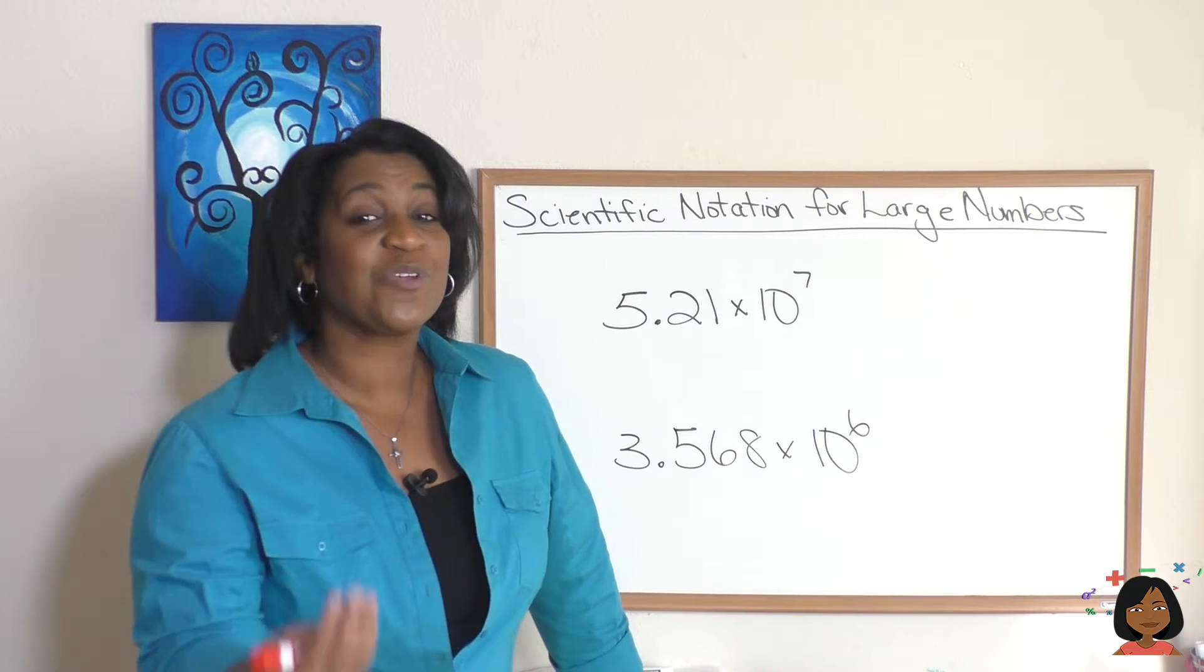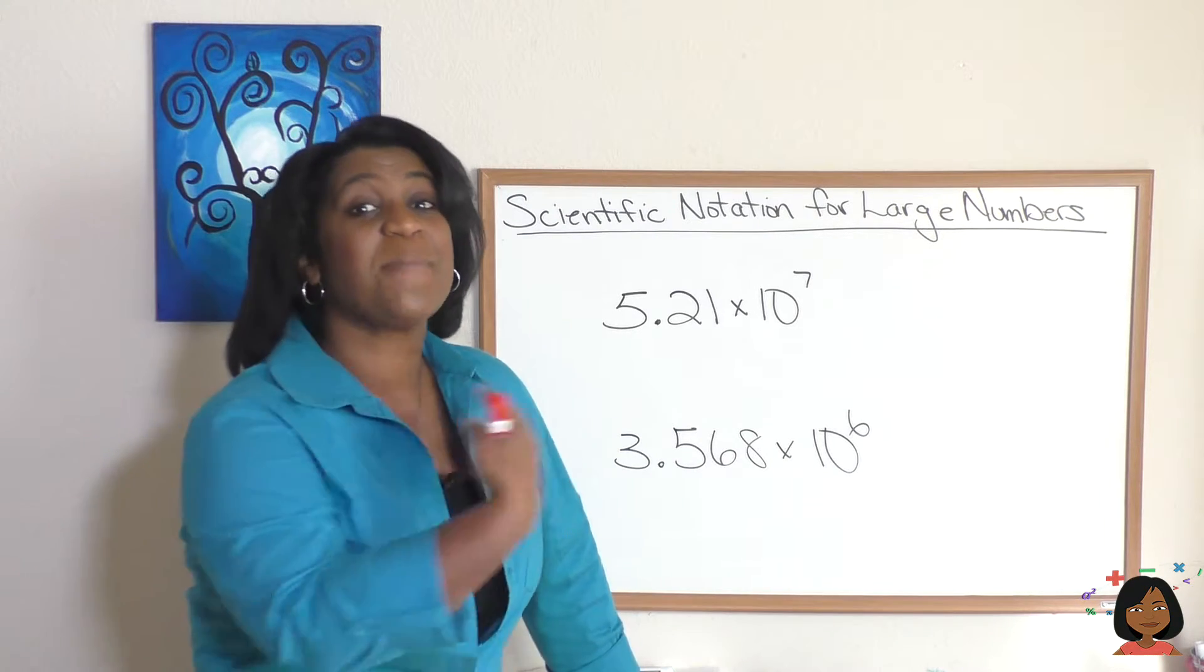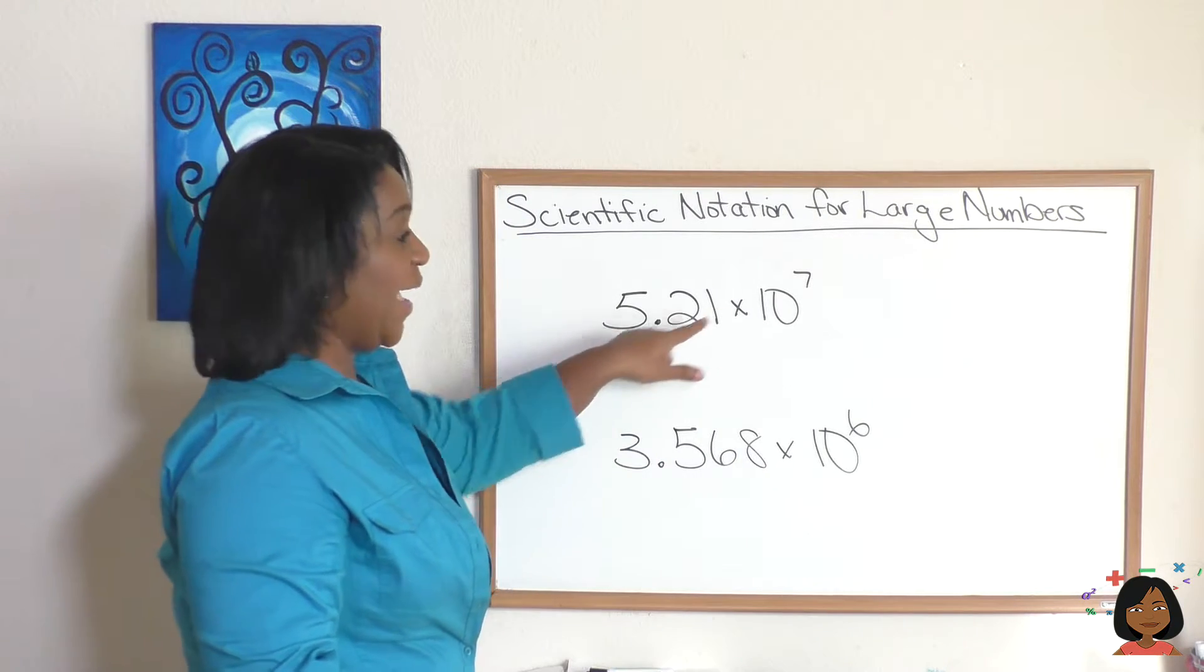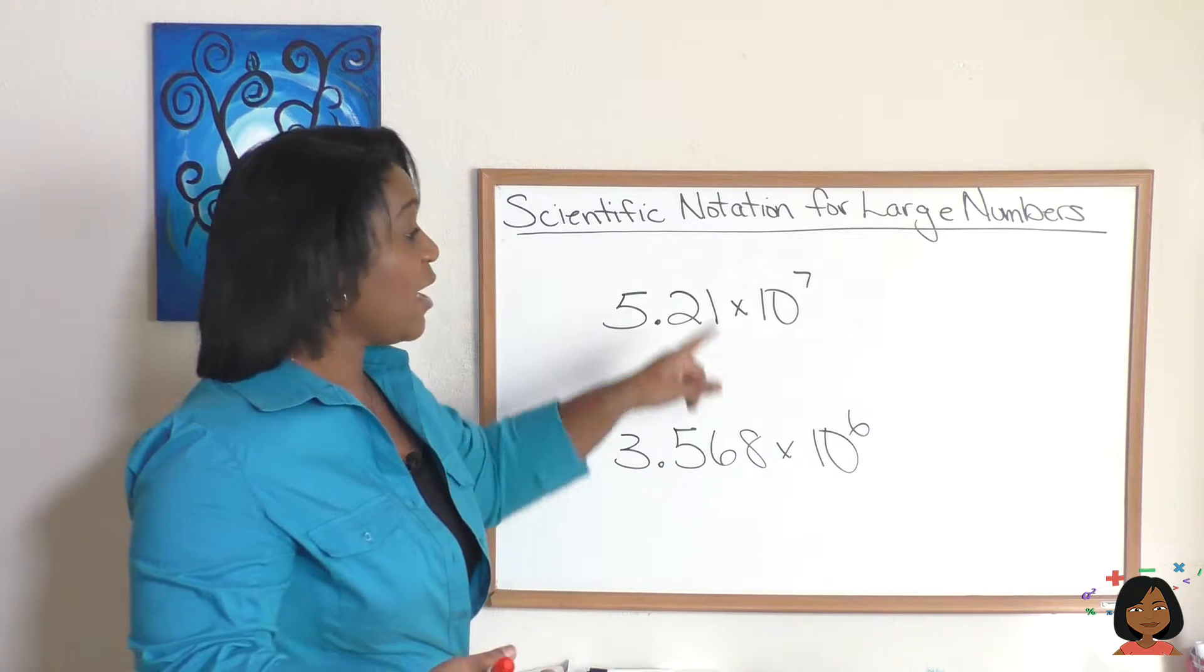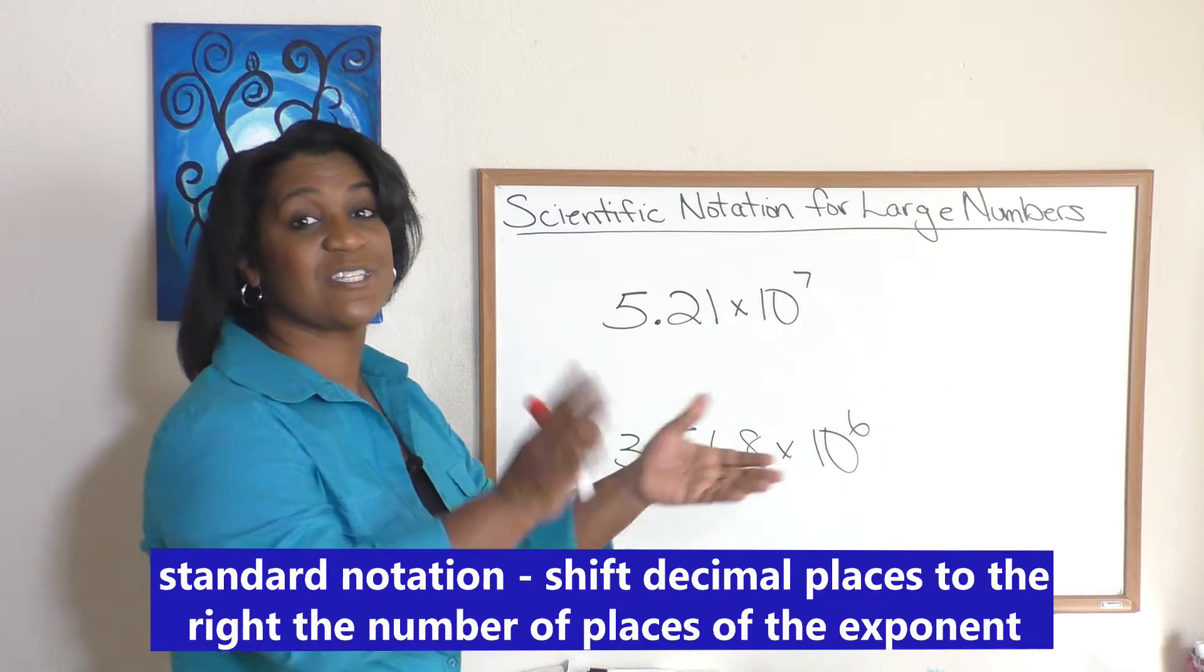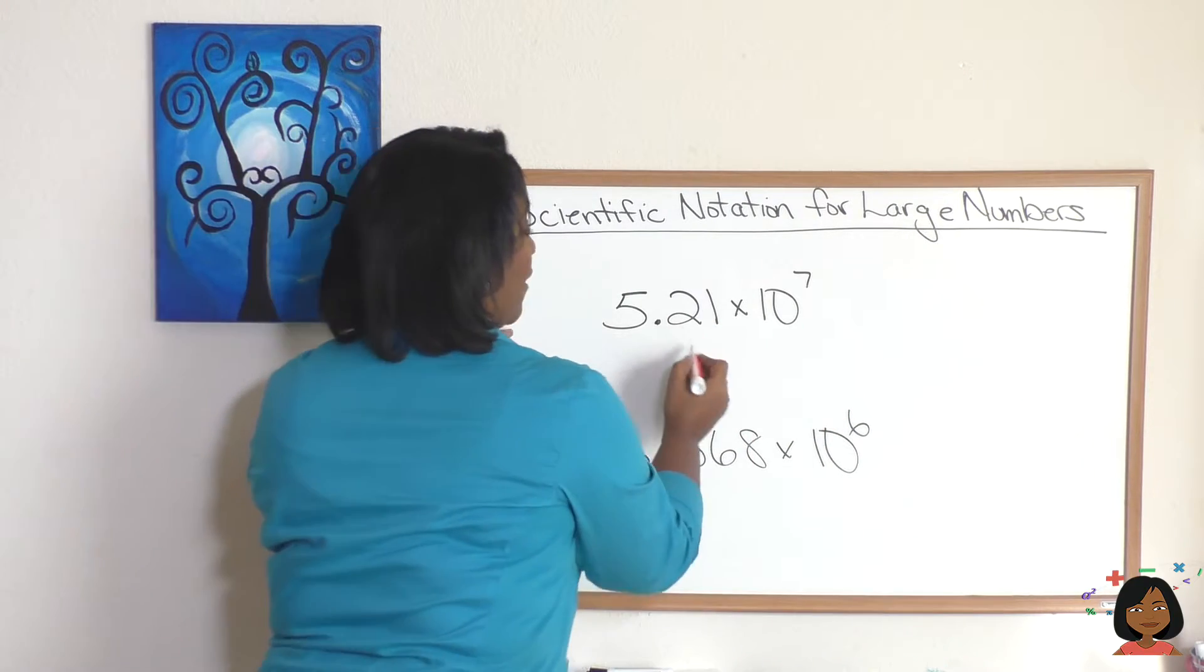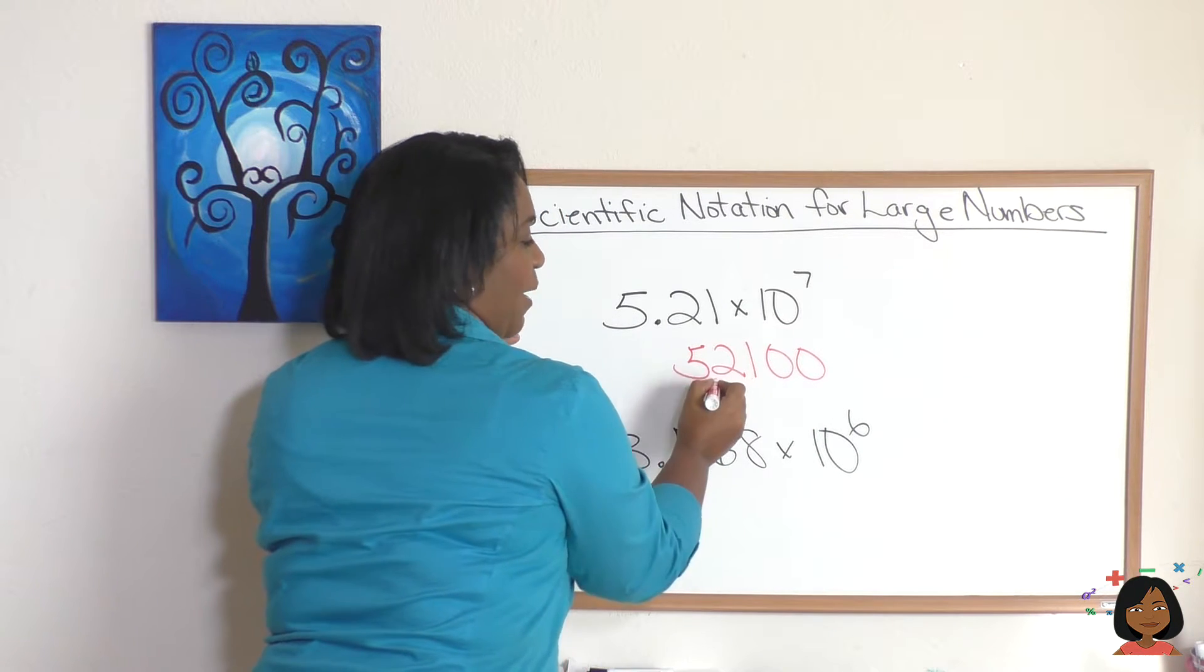And the good news is you can go in both directions. So we can move from scientific notation back to standard form. Here's how we do it. So we have our decimal point here, and we have that exponent, which is the power of 10. Let's move our decimal seven places to the right. We want to make our number bigger again. So here we go. I'm going to put in a bunch of zeros.